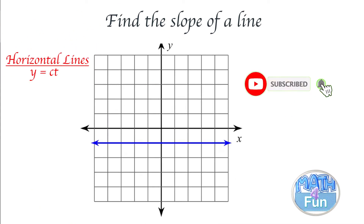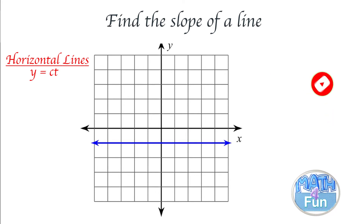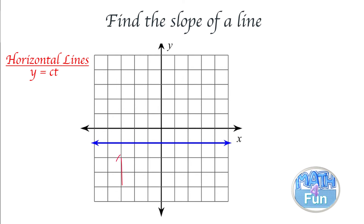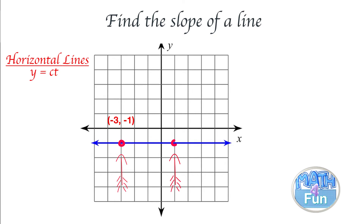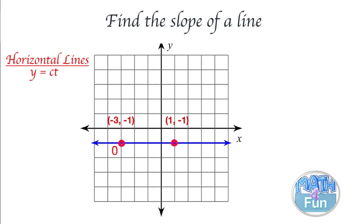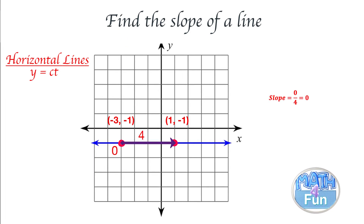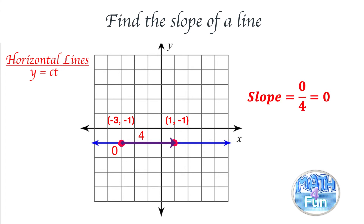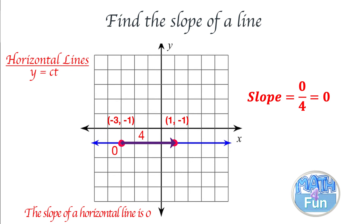Now let's look at the horizontal line. You can pick any two points on the line, but make sure they fall on corners. Let's take the point negative three, negative one and the point one, negative one. Are we going up? No. Going down? No. So the rise is zero. Moving to the right: one, two, three, four — that's the run. So we have zero over four, which equals zero. The slope of any horizontal line is zero.